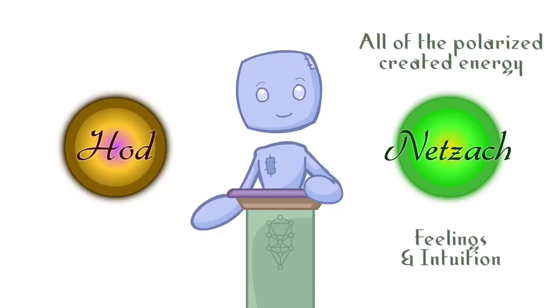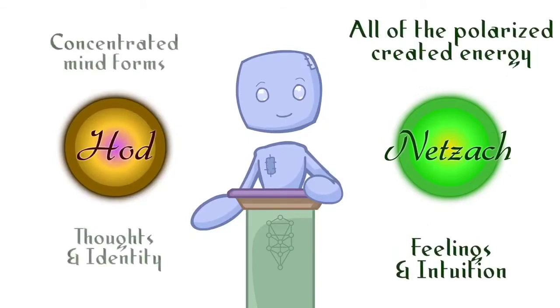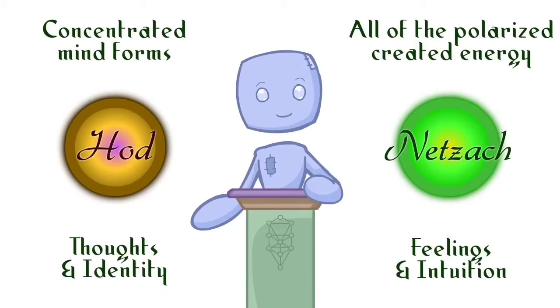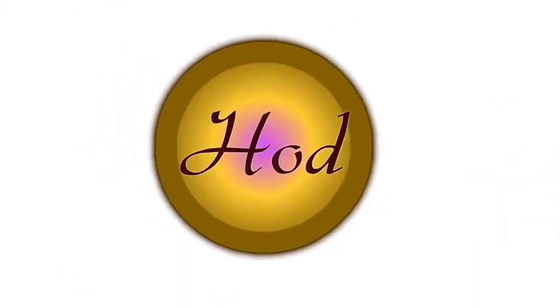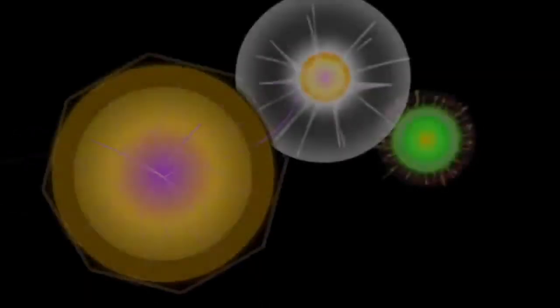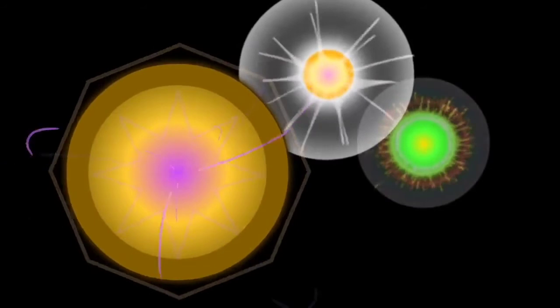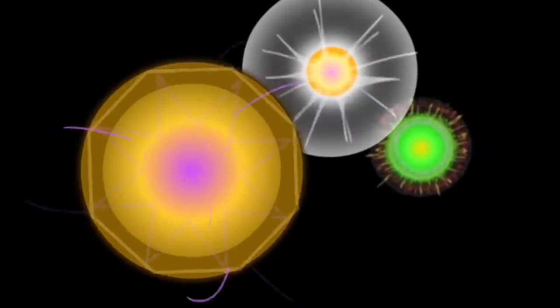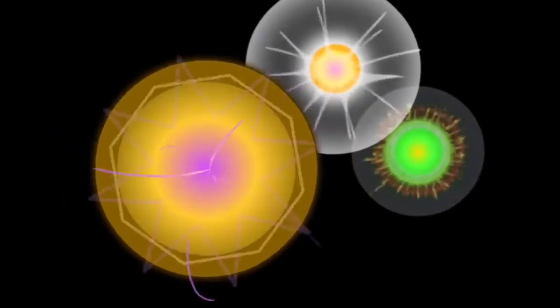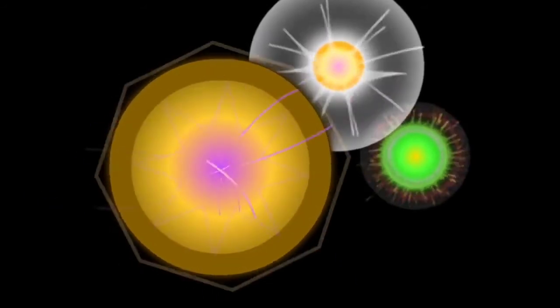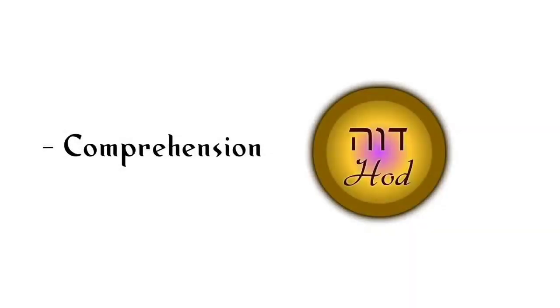It is best understood in relationship with its partner on the other side called Hod. Where Netzach is our intuition and emotions, Hod would be our thoughts and fixed mental formations. The eighth Sephira, Hod, represents the place where all of these polarizing energies of Netzach, all of the feelings, intuitions, and subtle energies that move through our body of consciousness, become tangible concepts in the human mind.